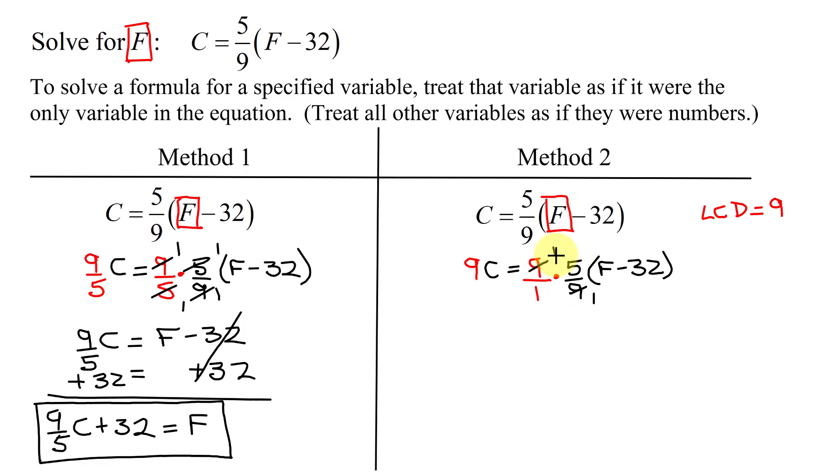My 9s reduce, so I get 9C equals 1 times 5 is 5, over 1 times 1 is 1, 5 over 1 is just 5. So it's 5 times the quantity F minus 32.